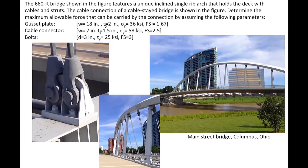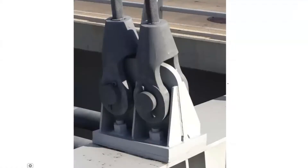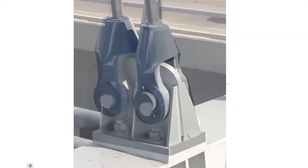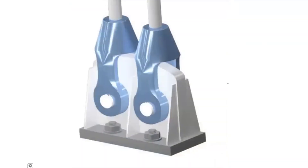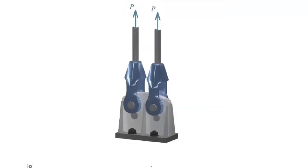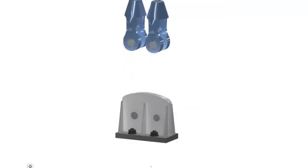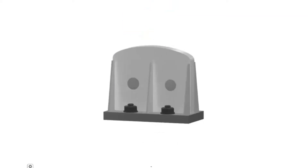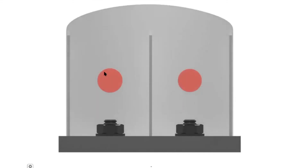First, let's look at the shearing failure in the bolts. This is the connection we have, and I'm going to turn it into a 3D model. The shearing failure is the type of failure where the bolts are shearing. In that case we need to identify what is the area where the bolts are failing. Zooming into the connection, we can identify two circular areas where the bolts are shearing.